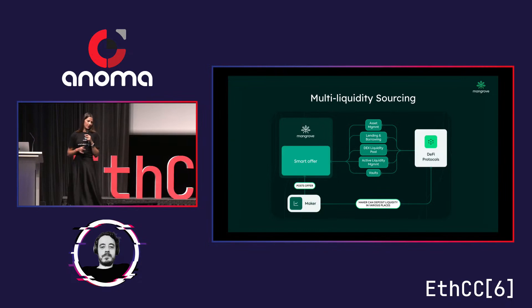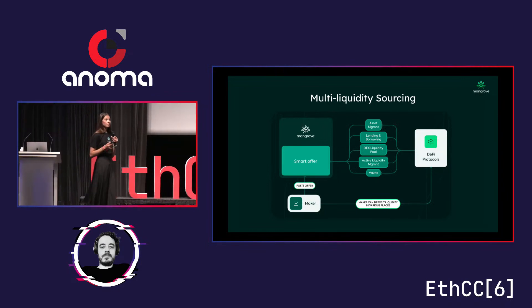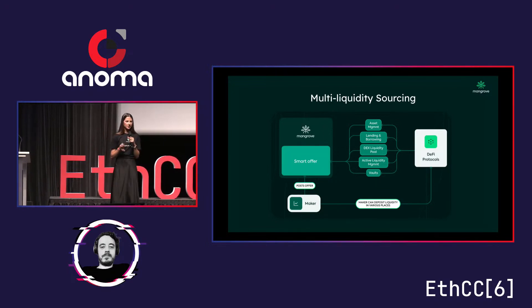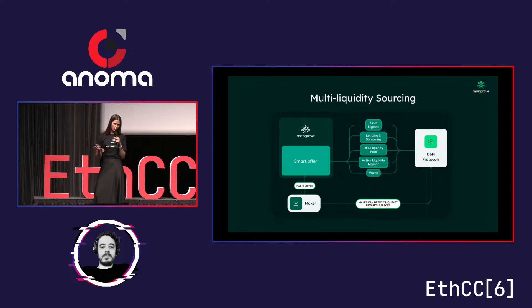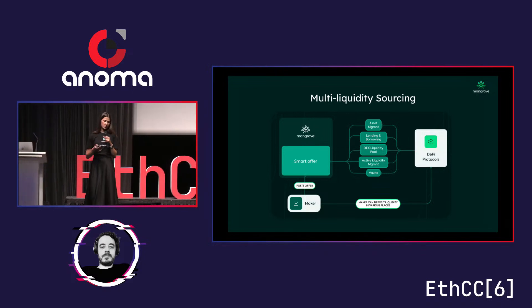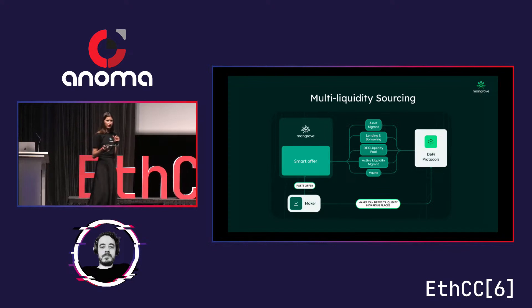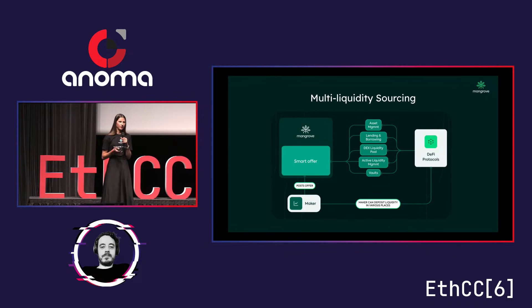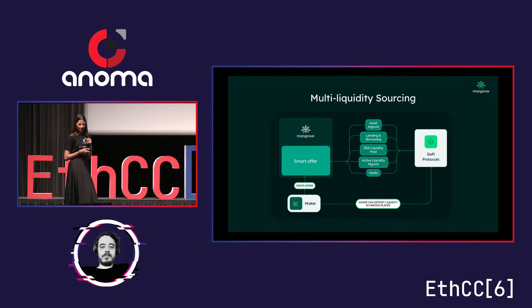The last feature worth mentioning is multi-liquidity sourcing. Makers are able to embed any type of logic they wish into smart offers, meaning liquidity can be sourced from literally anywhere within the DeFi space. Some examples include borrow-lend protocols like Morpho, Aave, and Compound; liquidity pools like Uniswap or Balancer; or active yield management protocols like Beefy or Tato — just a couple of examples of the various possibilities out there.